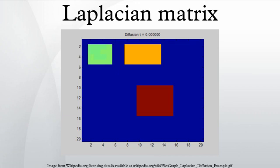Cheeger's inequality from Riemannian geometry has a discrete analog involving the Laplacian matrix. This is perhaps the most important theorem in spectral graph theory and one of the most useful facts in algorithmic applications. It approximates the sparsest cut of a graph through the second eigenvalue of its Laplacian.